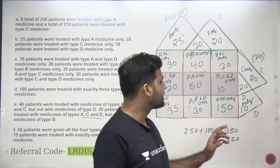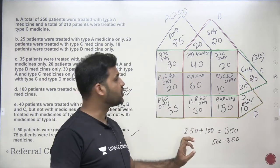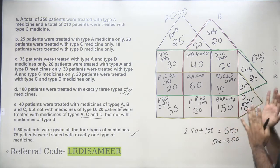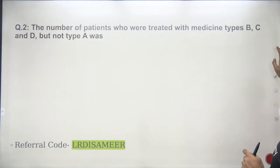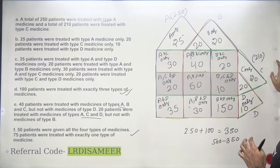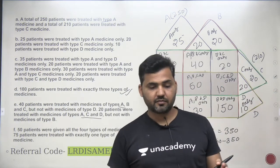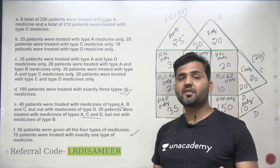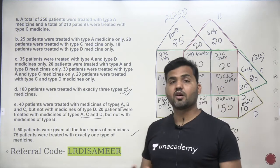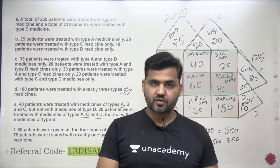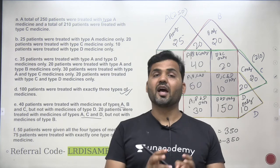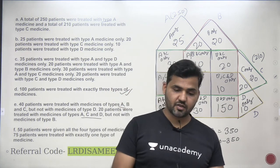There were four questions asked from this set, which I will discuss in the next part of this video. Please try these questions yourself first: how many patients were treated with type B medicines; type B, C, and D but not type A — and so on. Thank you for watching. You can attend my live sessions on Unacademy Plus using referral code LRDISAMIR for maximum discount. Join my Telegram group via the link in the description for free CAT exam preparation content and links to my free special classes on Unacademy, happening every day till CAT 2021.